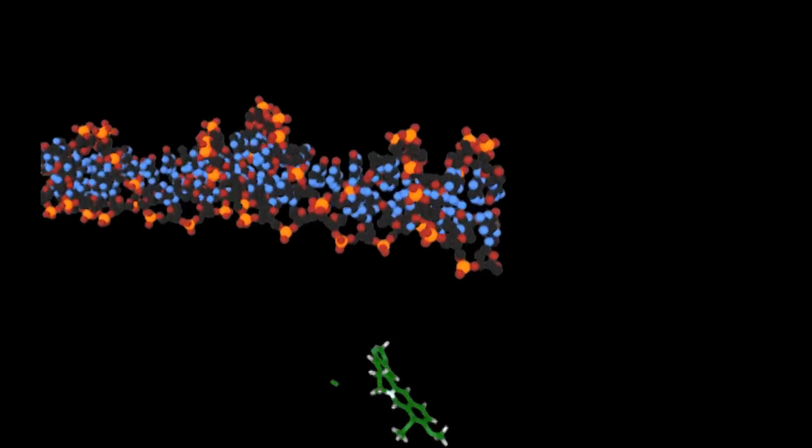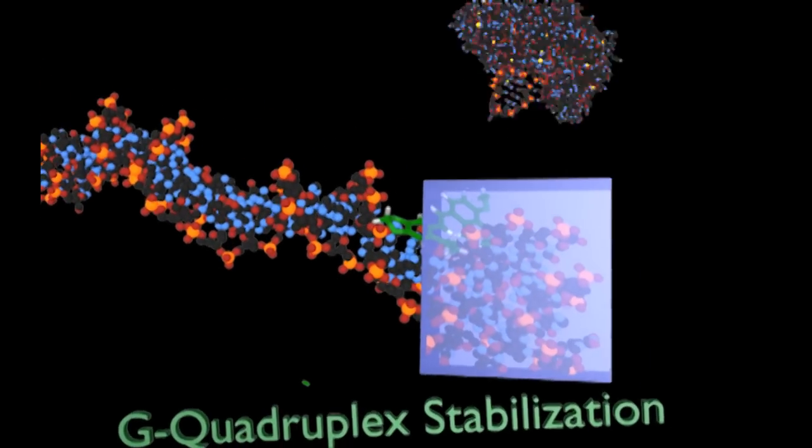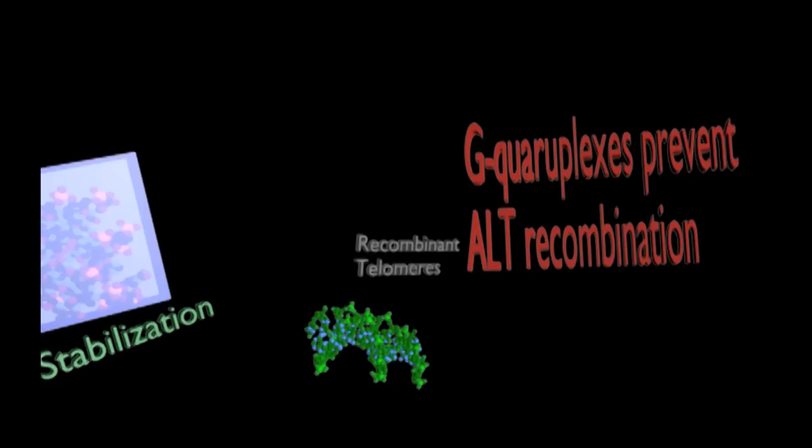So for my project, I wanted to examine the effects of recombination ability in ALT cells in presence of G-Quadruplex ligands that force the telomere into G-Quadruplex deformation.